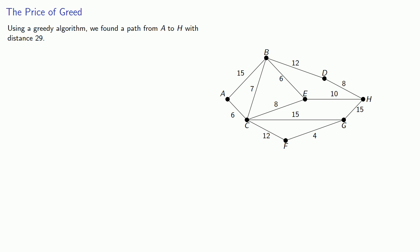Using a greedy algorithm, we found a path from A to H with distance 29. But can we do better? And more importantly, can we describe how we do it?